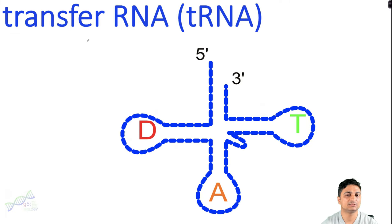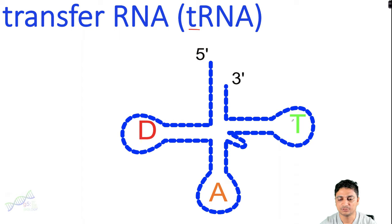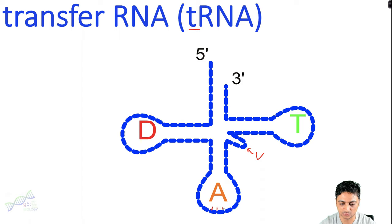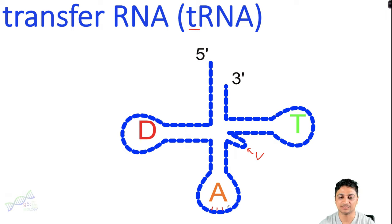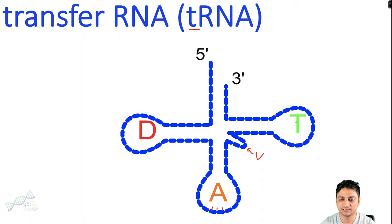The second type of RNA is transfer RNA, or tRNA. tRNA has a five prime and three prime end. Towards the five prime end there is a D loop, an anticodon loop, a T loop, and a small arm called the variable loop. The anticodon recognizes the codon present in the mRNA molecule and then transfers the corresponding amino acid to the protein synthesis chain, adding one amino acid in each reaction. The T loop is responsible for the stability of the tRNA and its association with ribosomal proteins.